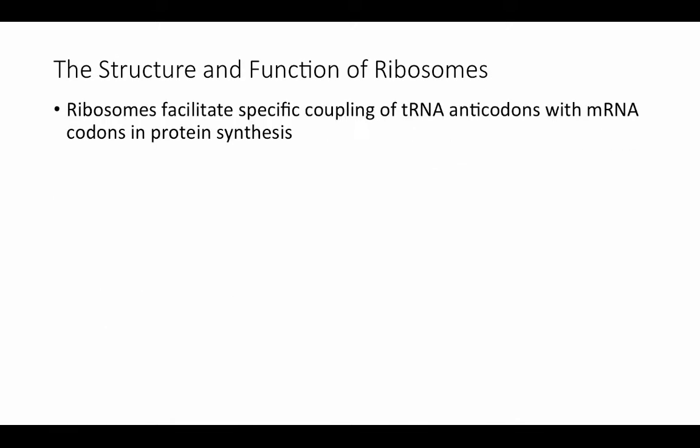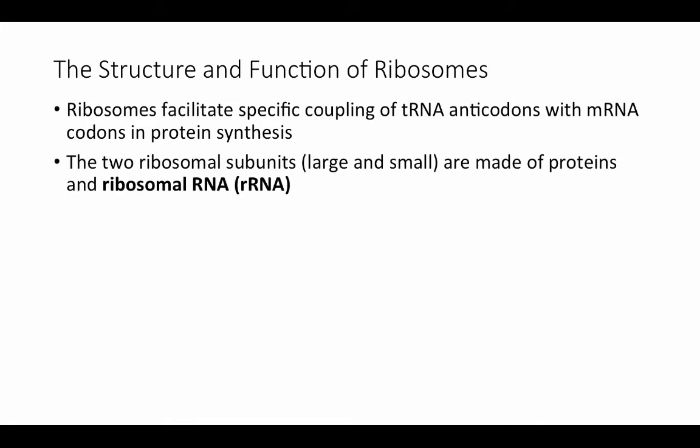Let's look at the structures on which this whole process happens — the ribosomes. Ribosomes facilitate the specific coupling of tRNA anticodons with mRNA codons during protein synthesis. Ribosomes come in two ribosomal subunits, one large and one small. Ribosomes are made of proteins and another functional form of RNA called ribosomal RNA, or rRNA.